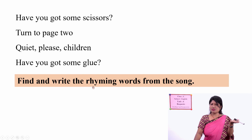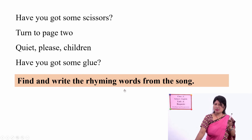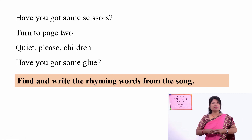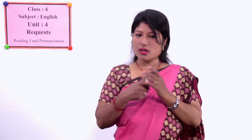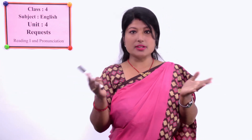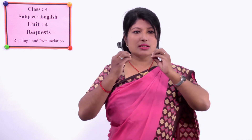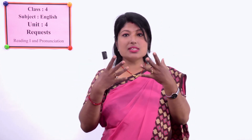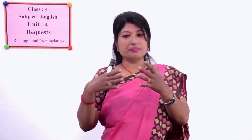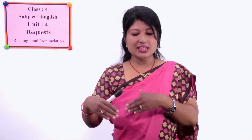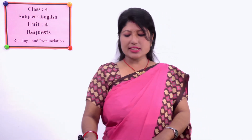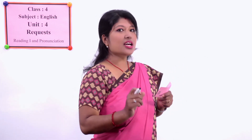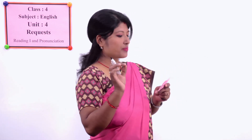What kinds of words are rhyming? You must have learned before. Let me remind you — rhyming words are words which sound similar when we pronounce them. The spellings may be different, but when we pronounce them the ending sounds are similar. Like: fall, ball, tall — these are rhyming words.